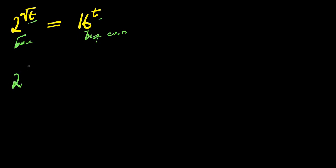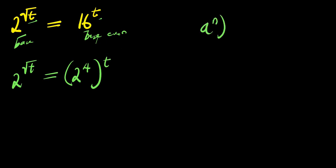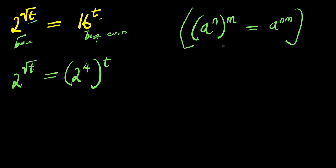So we have 2 to the power of root t equals 16, and 16 can be written as 2 to the power of 4, raised to the power of t. Applying the identity (a^n)^m = a^(n×m), we get 2 to the power of root t equals 2 to the power of 4t.